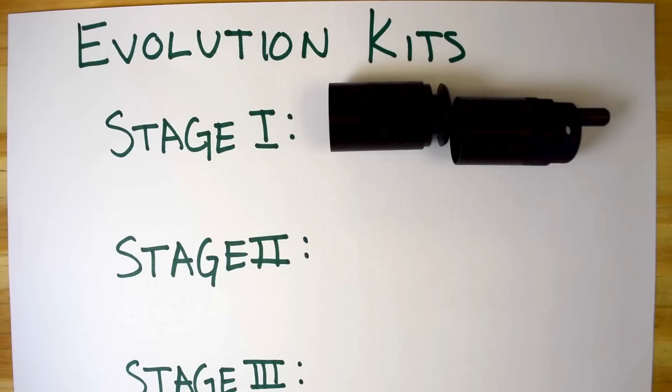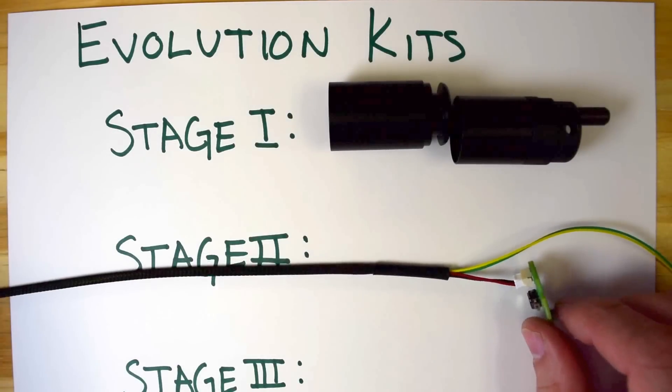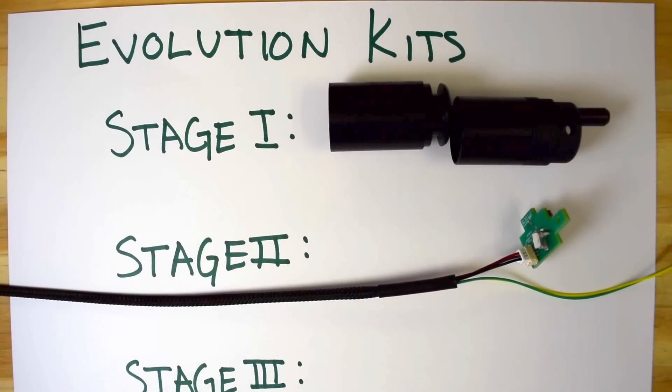So, we do recommend that for any center line build. Now, your stage two kit will include the front end plus your trigger board and wire harness for the gun that you're moving to.